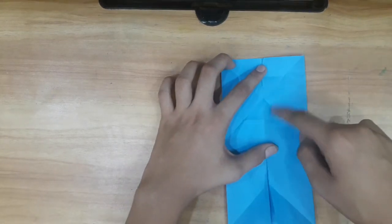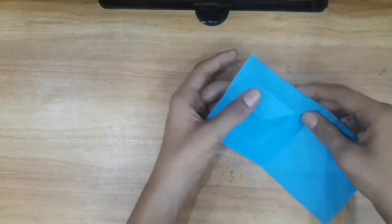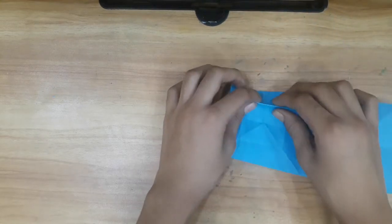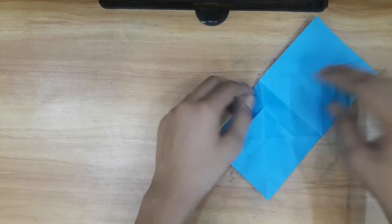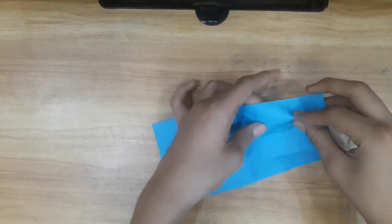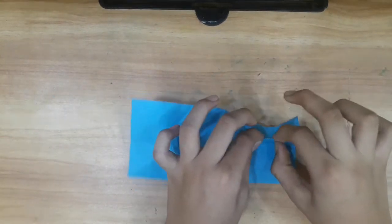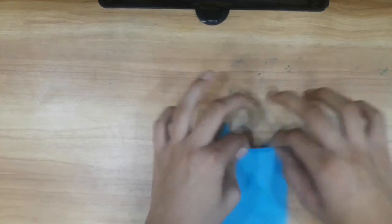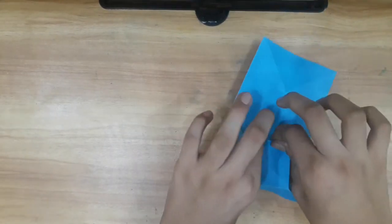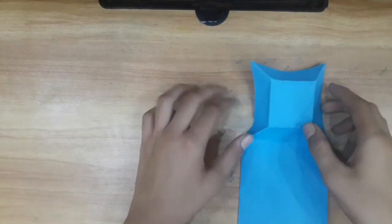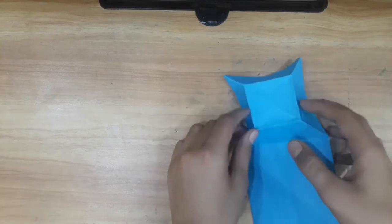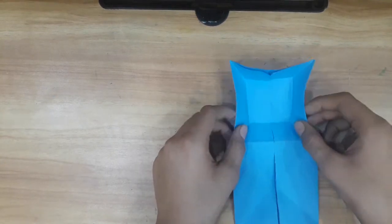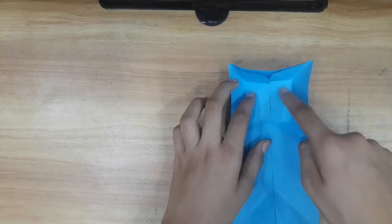Now there's this square, so we have to flip it, and then we have to make the lines more crisp. I've done. Now flip it again. You are able to see a perfect square here.